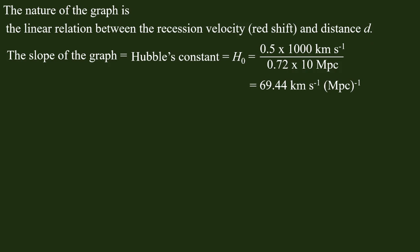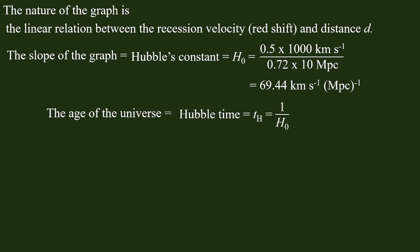The age of the universe is the Hubble time, which is the reciprocal of the Hubble constant. So Hubble time T = 1 / H₀.